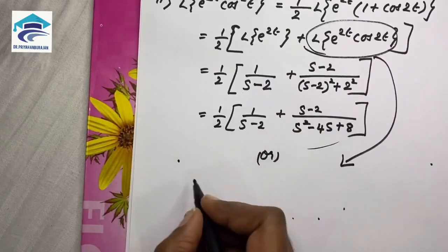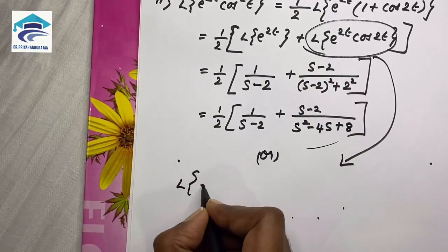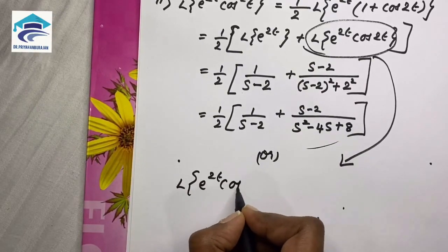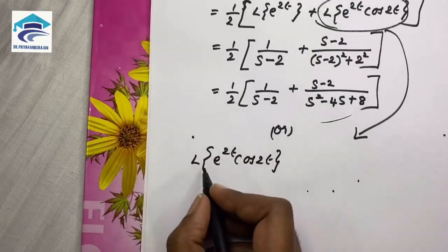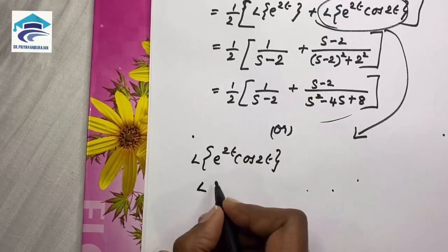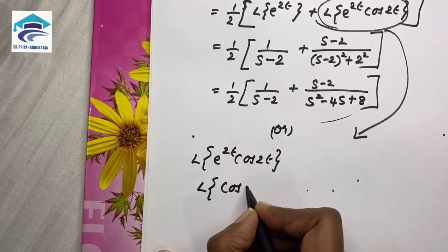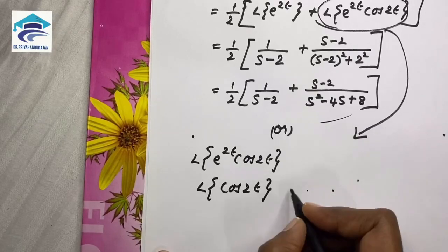I am doing L of e power 2t cos 2t. In order to derive this, first we need the Laplace transform of cos 2t.